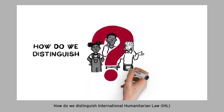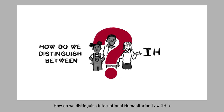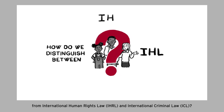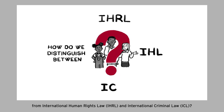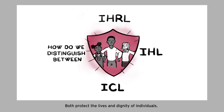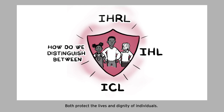How do we distinguish International Humanitarian Law from International Human Rights Law and International Criminal Law? IHL and IHRL are bodies of international law that share some of the same aims — both protect the lives and dignity of individuals.